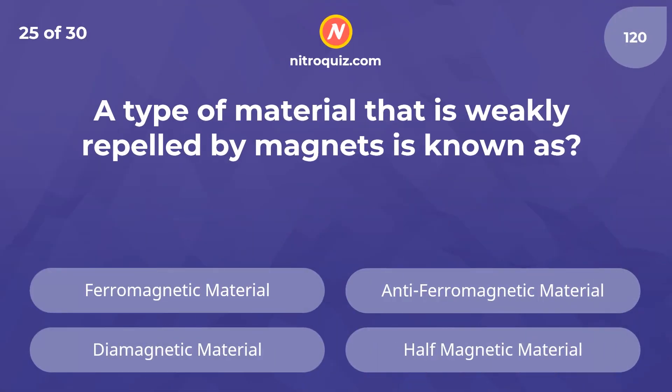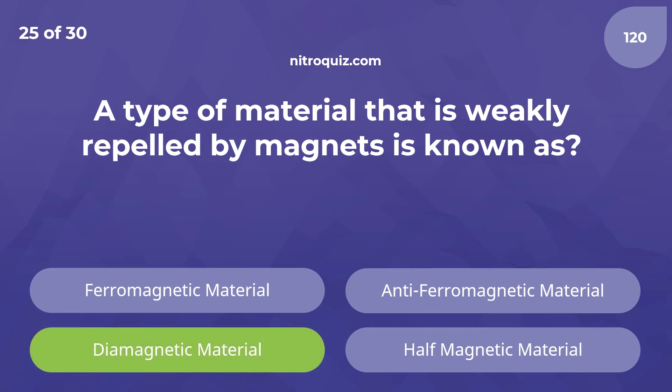A type of material that is weakly repelled by magnets is known as what? The answer is a diamagnetic material.